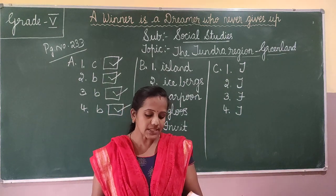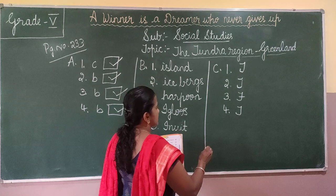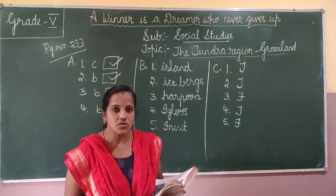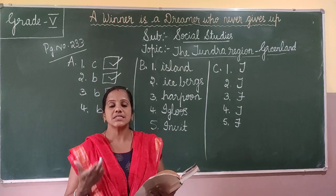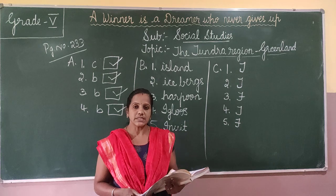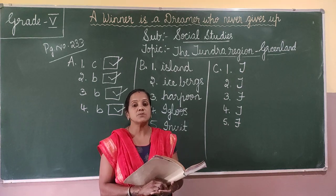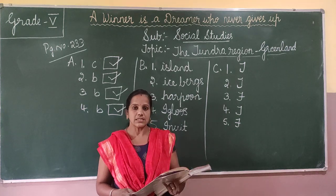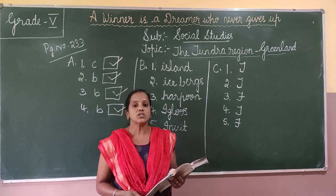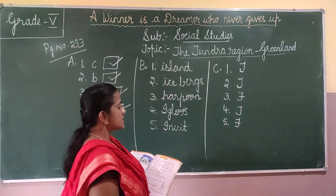Fifth: the sun never sets during the winter season in Greenland — that is false. The sun never sets during the summer season. Greenland is called the land of midnight sun because the sun shines brightly even at midnight during summer. In winter, for several weeks, the sun is not visible at all. So this statement is false.